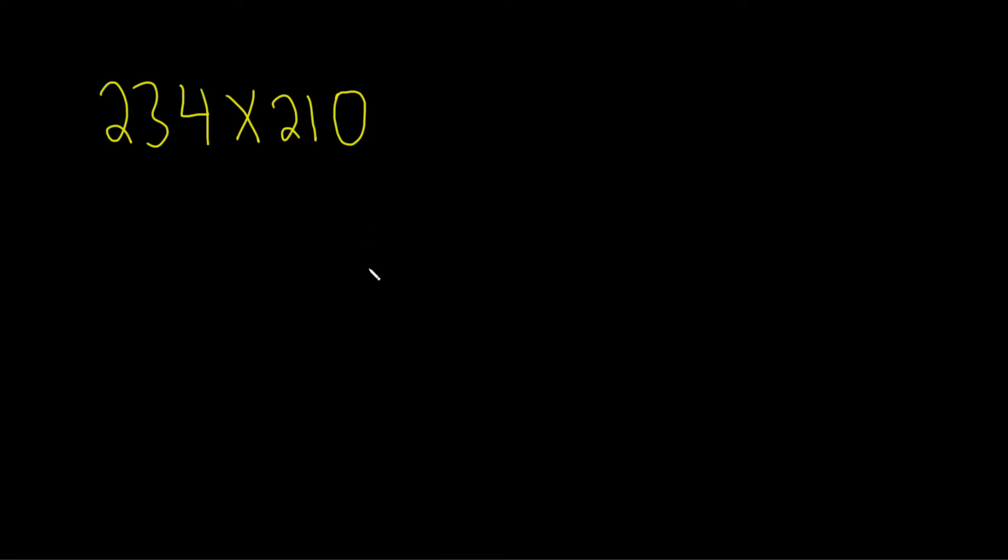In this problem we're going to multiply 234 times 210. We'll start by writing 234 up top like this, and 210 right below it. Then we'll draw a line and put a times symbol here.